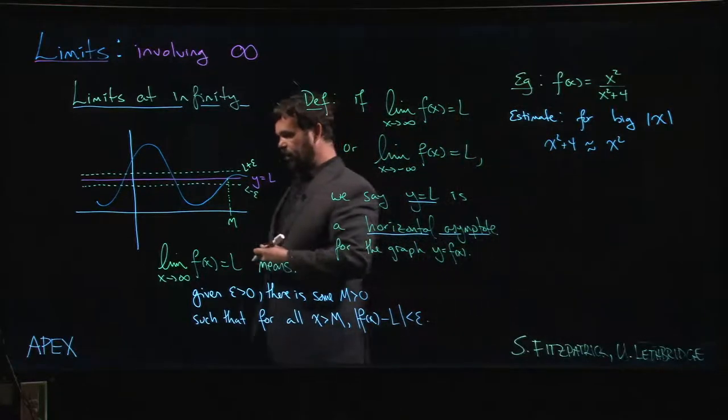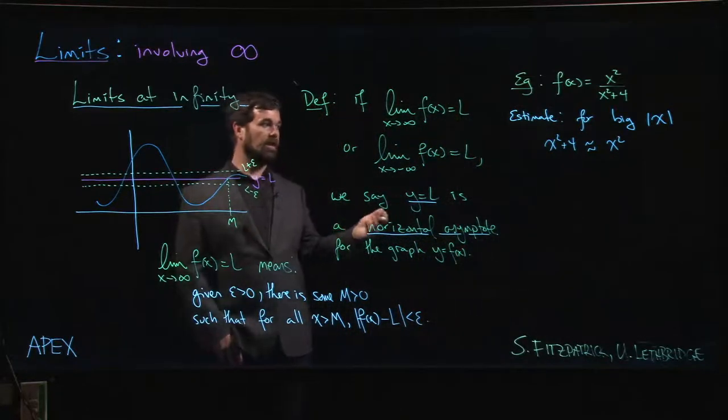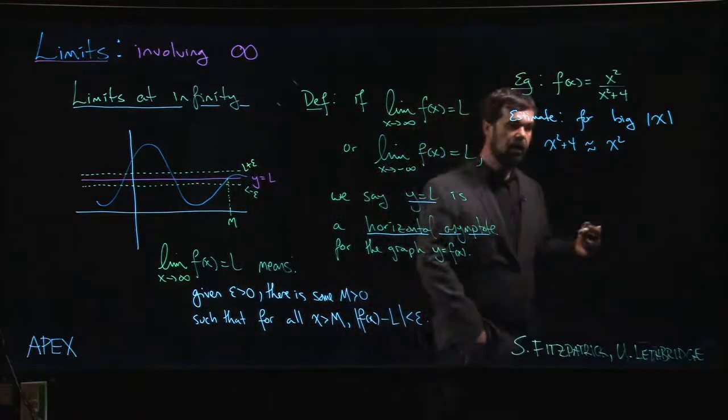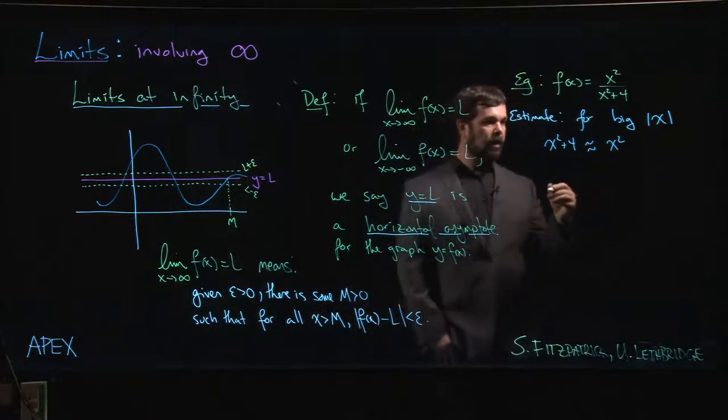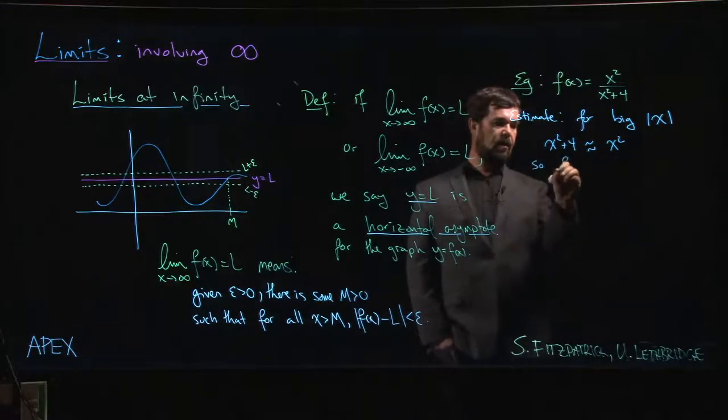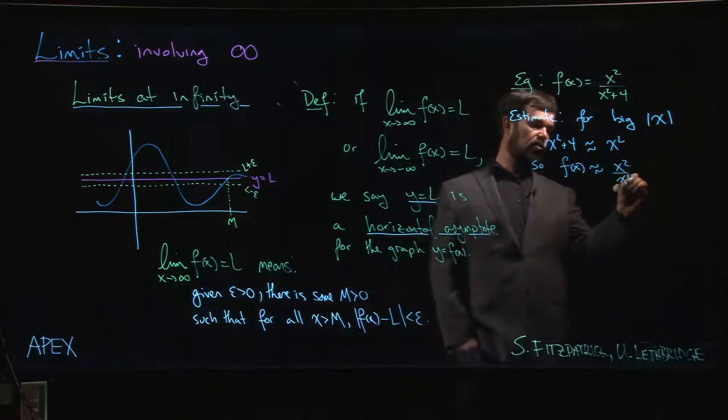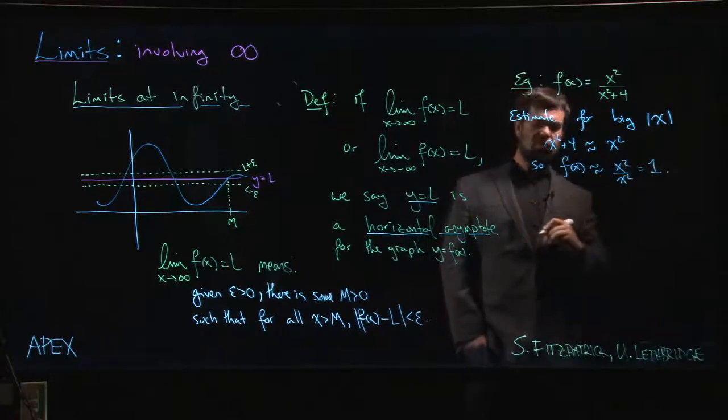Once x is in the millions or the billions or the trillions, if we square it, adding 4 doesn't make that much of a difference. So that means that f of x is roughly x squared over x squared, which is 1.